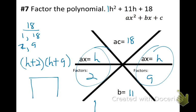And remember, if we multiply those back, we will get the polynomial that we started with. So h times h is h squared, 2h, 9h, 9 times 2 is 18.